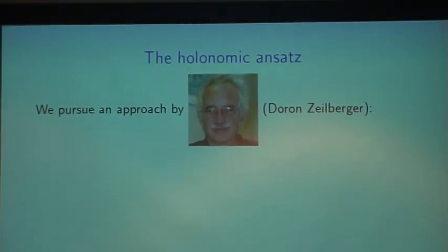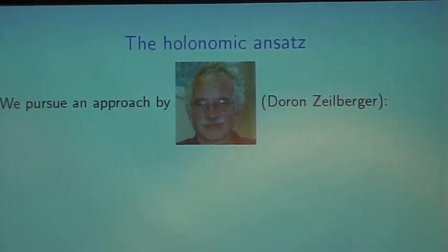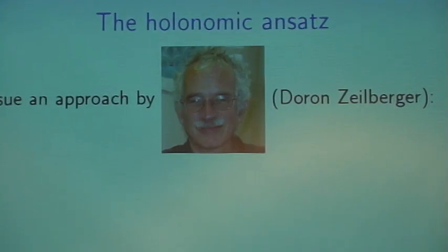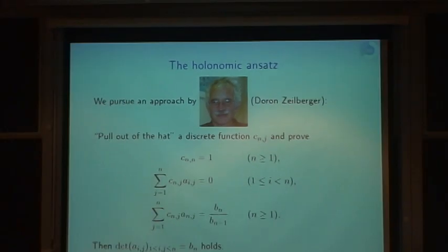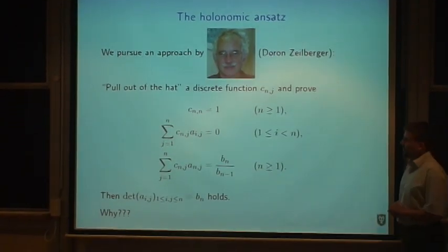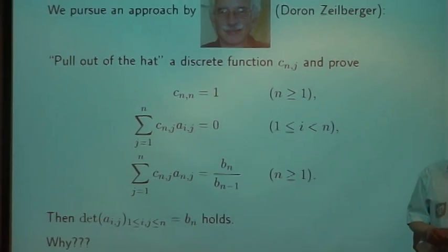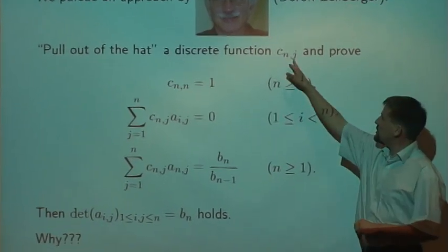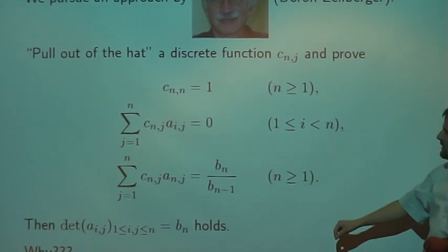Now we do a second reformulation of the problem that was proposed by Doron Zeilberger, and that's why he's also mentioned as a collaborator here. We do some magic, we play magician. We pull out of the hat some discrete function and we call it C and J, and then we have these three identities.